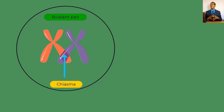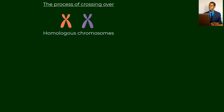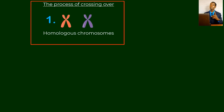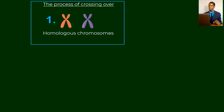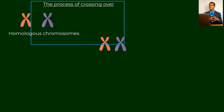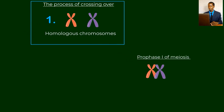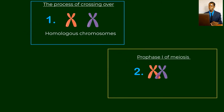At the chiasma there is the process of crossing over — exchange of genetic material. Looking at the diagram, at the beginning we have two homologous chromosomes; this takes place in prophase one of meiotic cell division. I have used different colors to show the difference between the two chromosomes — those colors represent the genes that they carry. In the second step of meiosis, the chromosomes have come into contact with one another — we call it association — and these two form the bivalent pair.